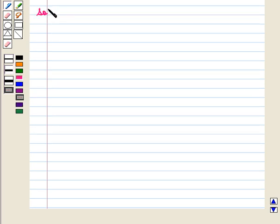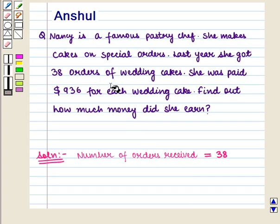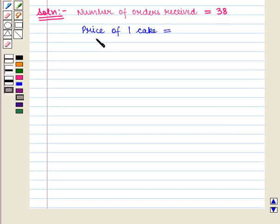Now let us start with the solution of the given question. The number of orders of wedding cakes received is 38, so we write number of orders received equals 38. Also, she was paid 936 dollars for each wedding cake, so we write price of one cake equals 936 dollars.